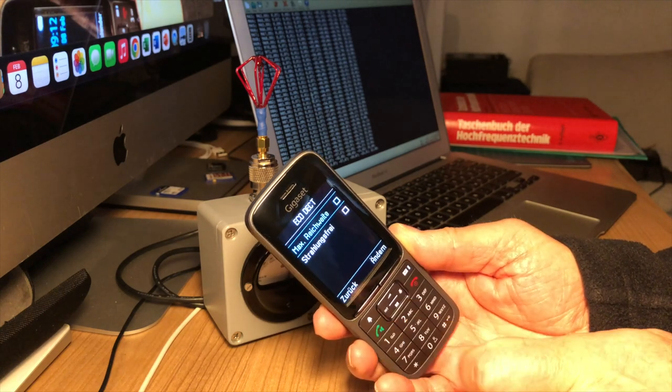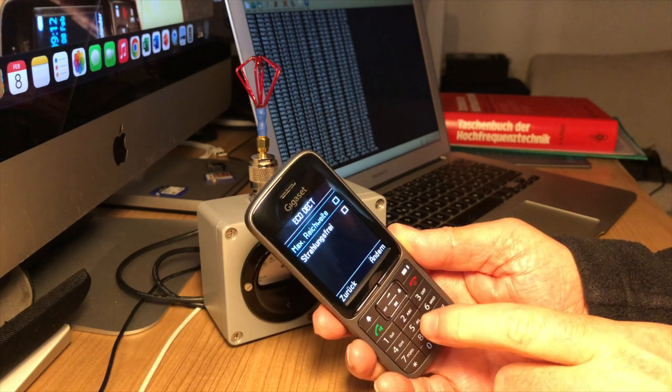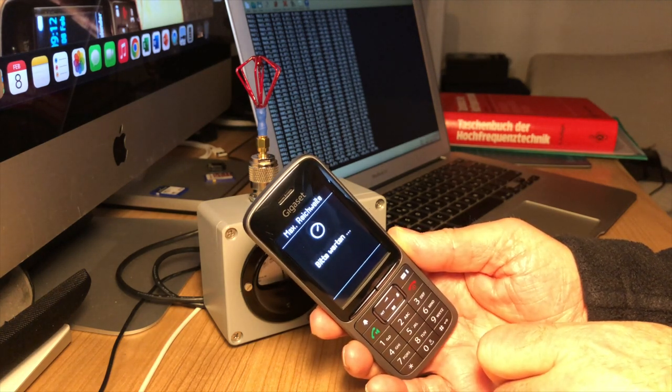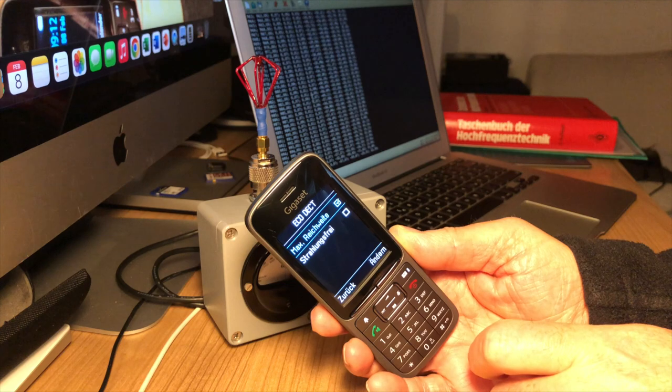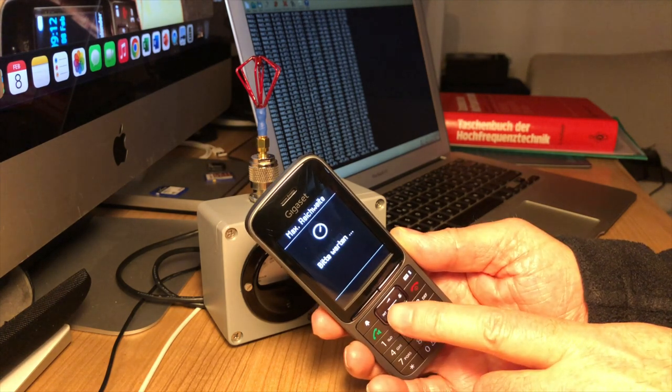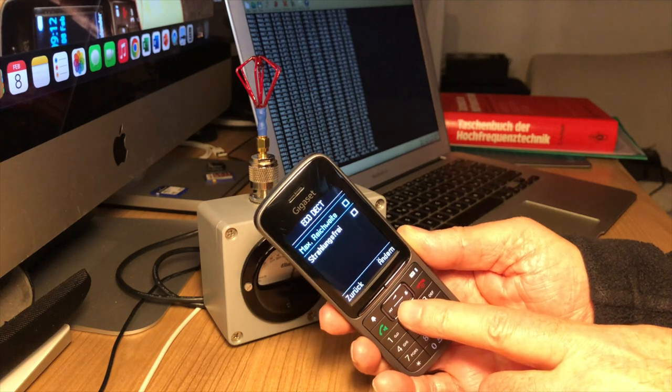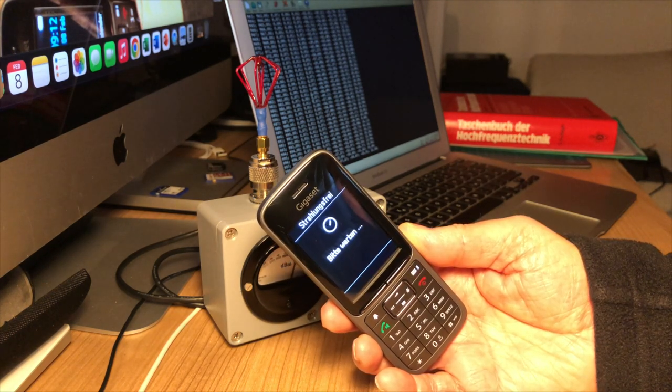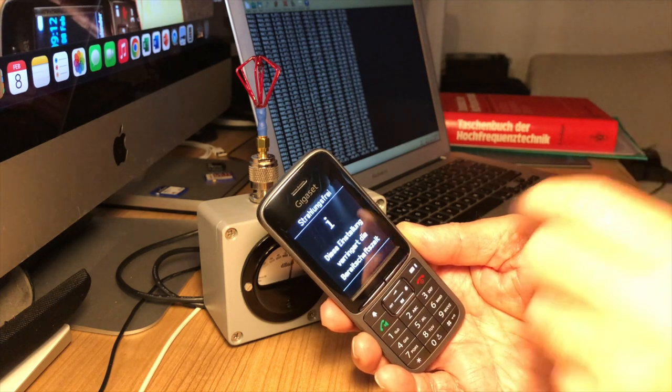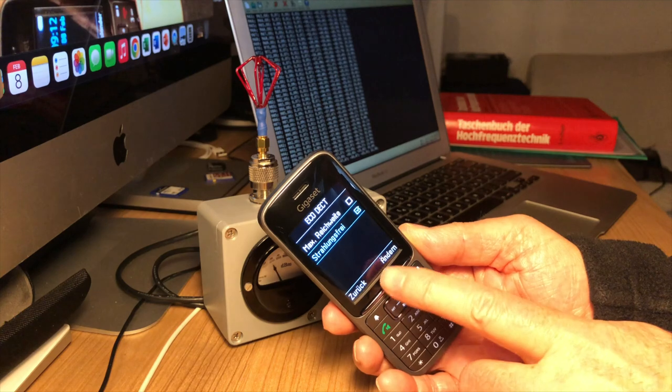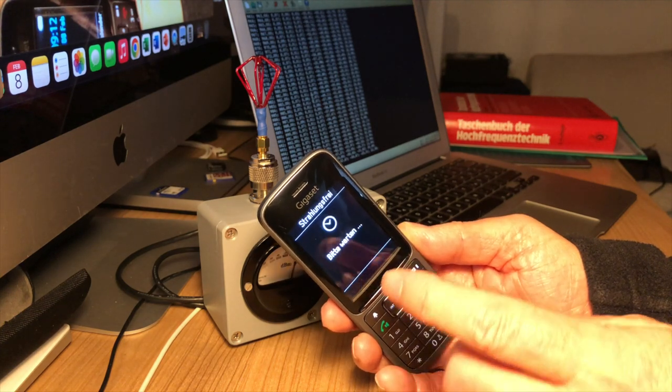So there are three options here. First we have the unchecked state, which seems to be the eco mode. Second the maximum range. This is the mode with the maximum transmission power. Third I could choose the radiation free setting, in which the base station remains completely radiation free as long as no calls are made.